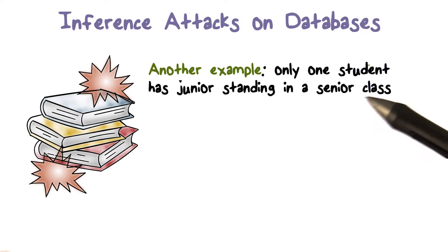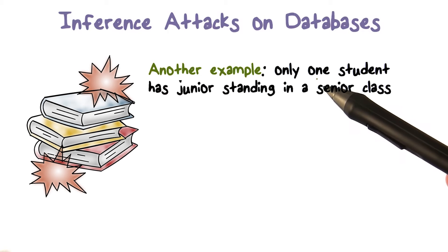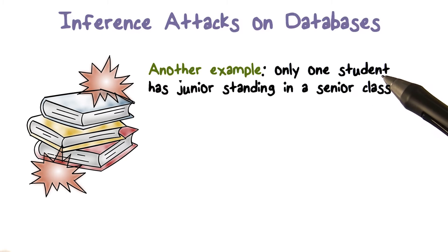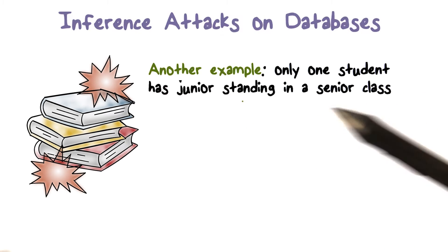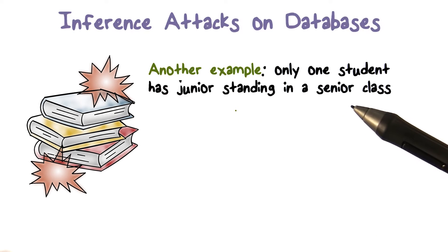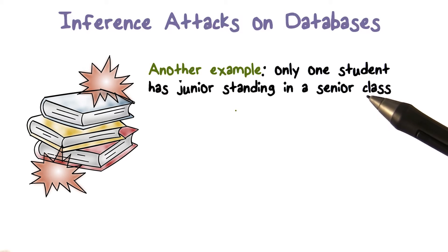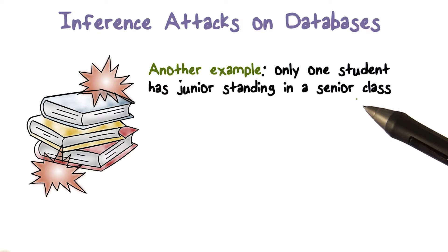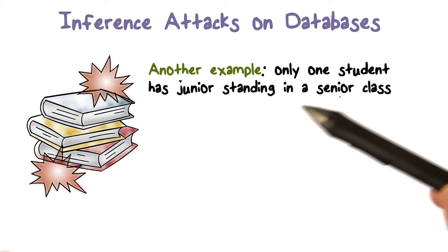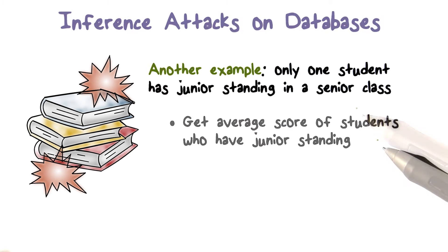In this case, we have only one student with a standing that is a junior, because the course is a senior course and one smart junior student chose to enroll in it. So it's a senior class and we only have one student who is a junior.